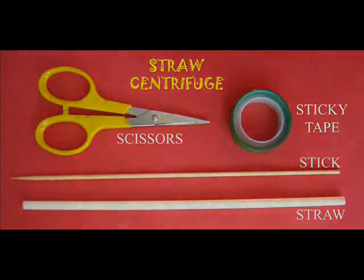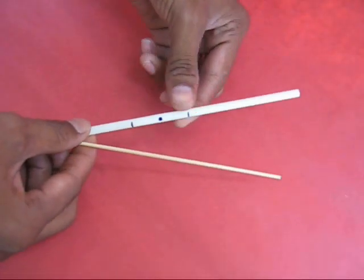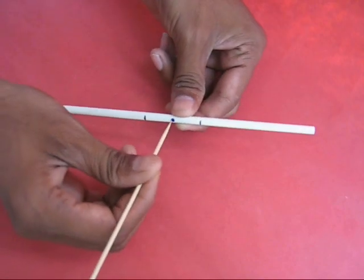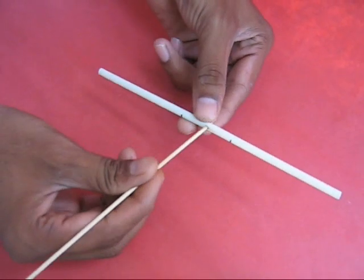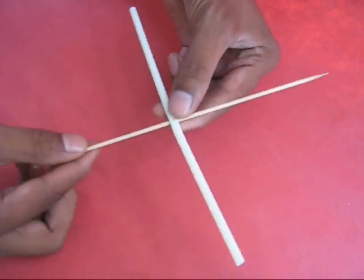Take a plastic straw and mark a dot at the center and a line on either side of the center. Poke a wooden stick through the central dot.